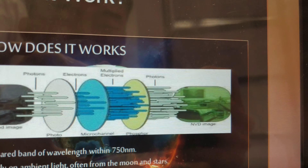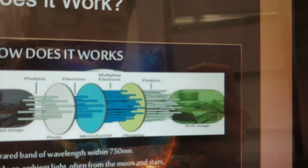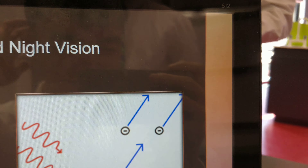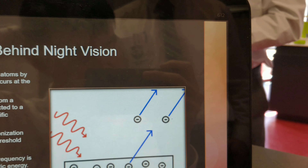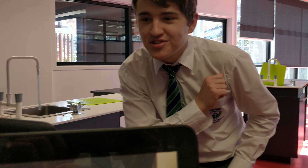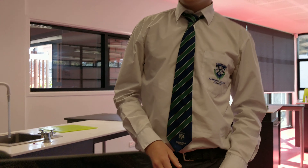Now let's go to the next slide, ladies and gentlemen. We are going to explore the physics behind night vision. Oxidisation is the ionisation of atoms by the loss of electrons. This occurs at the anode photoelectric plate.